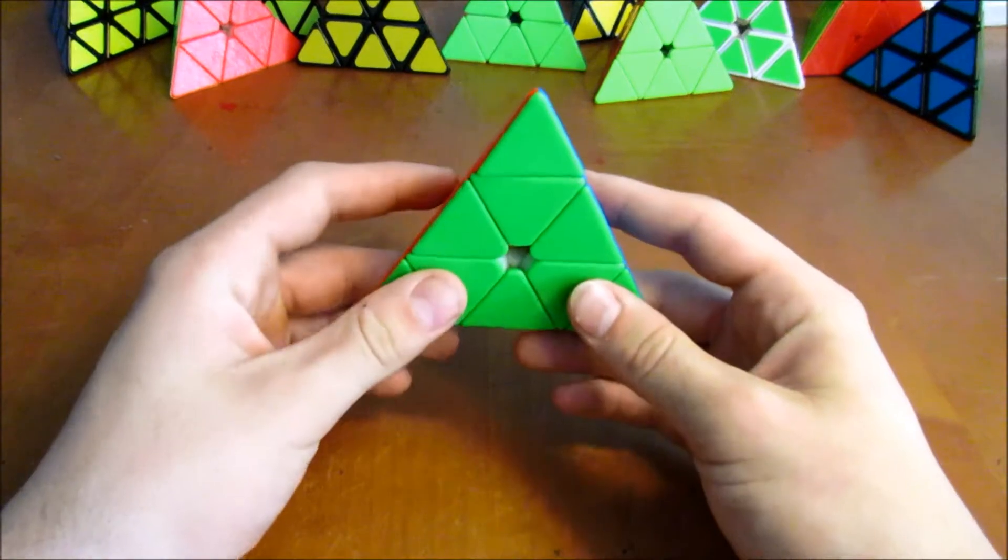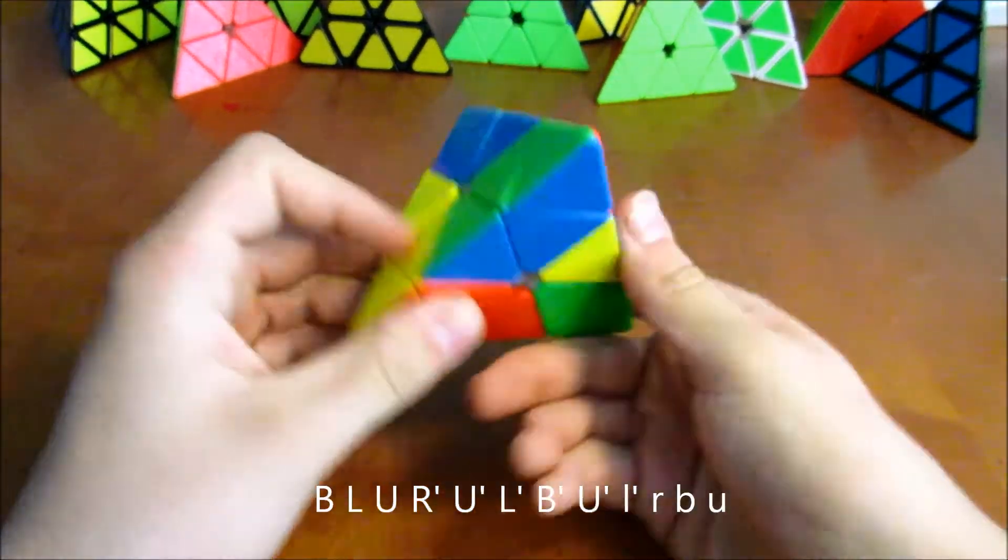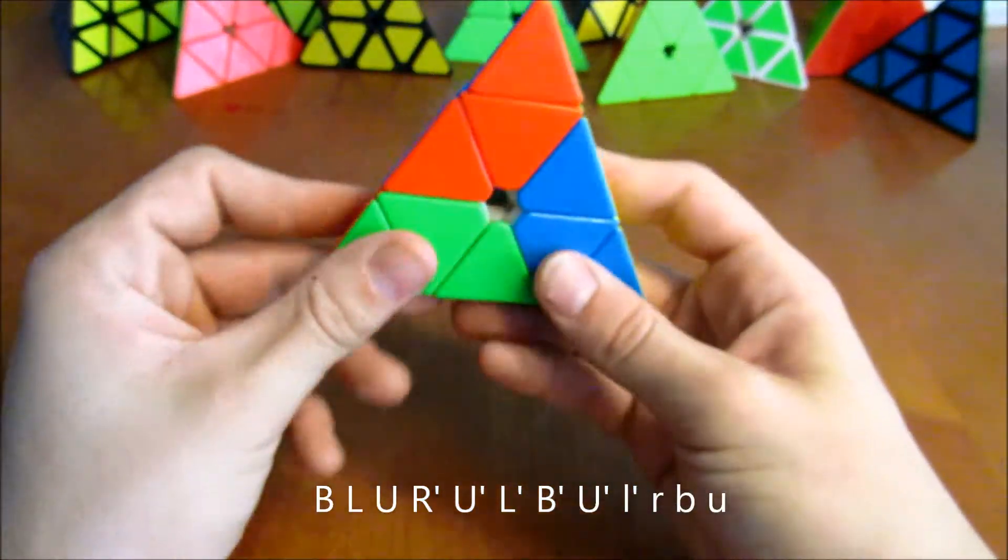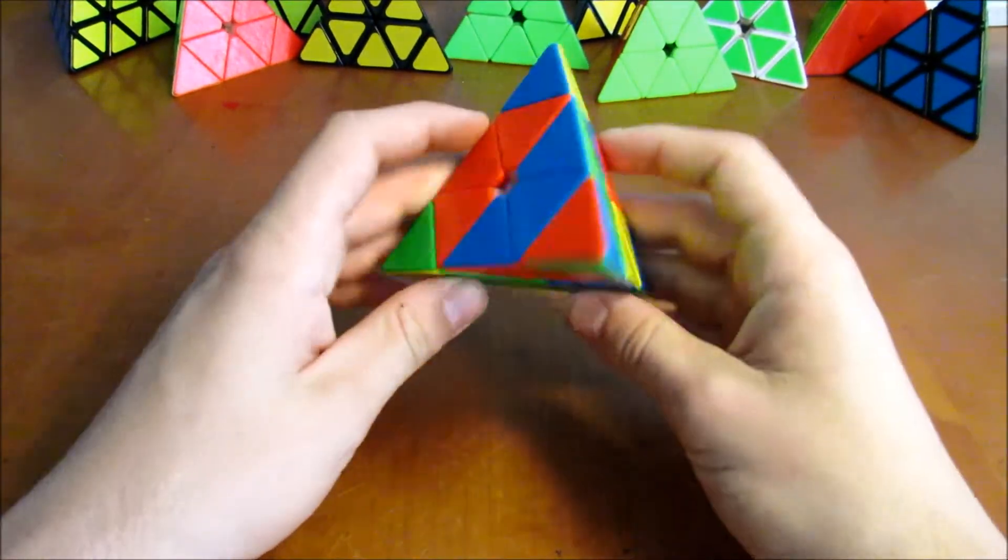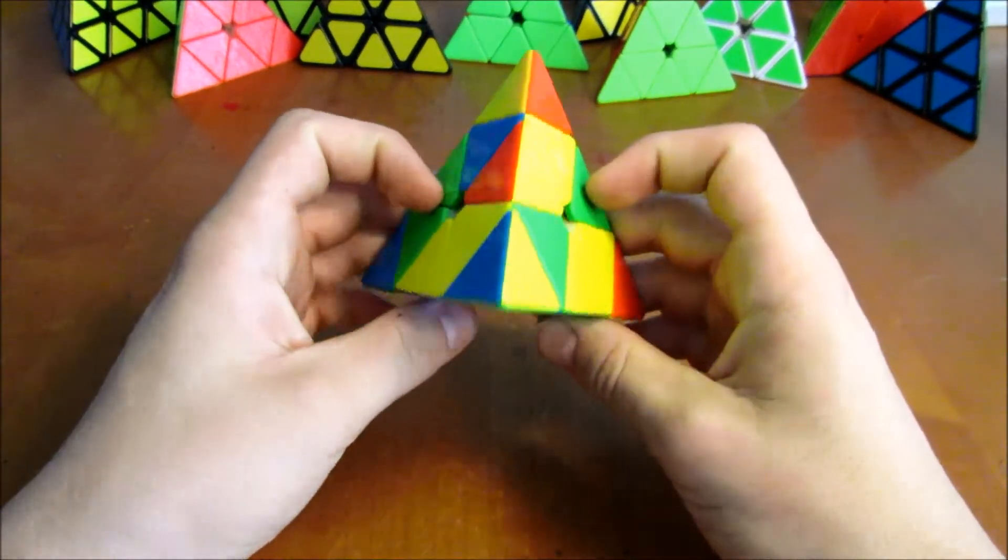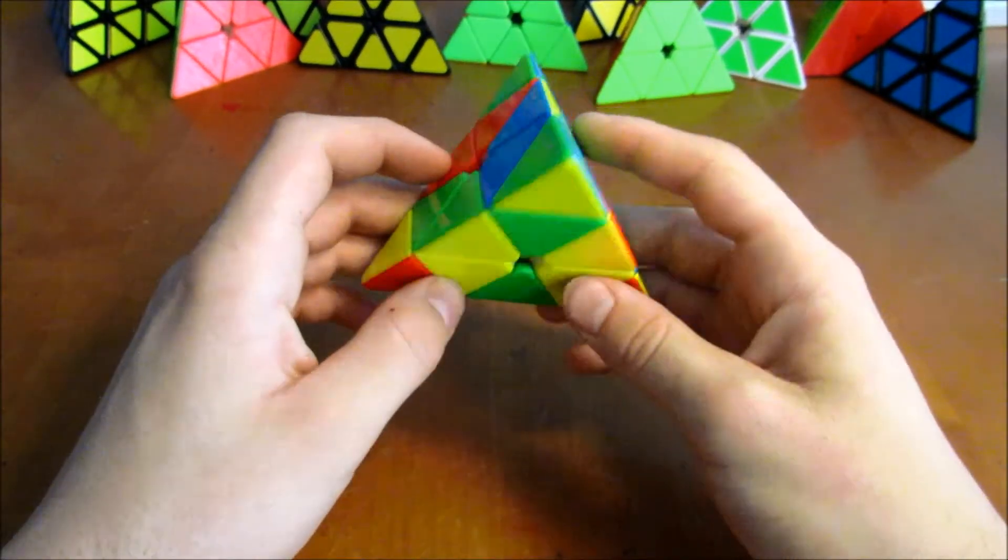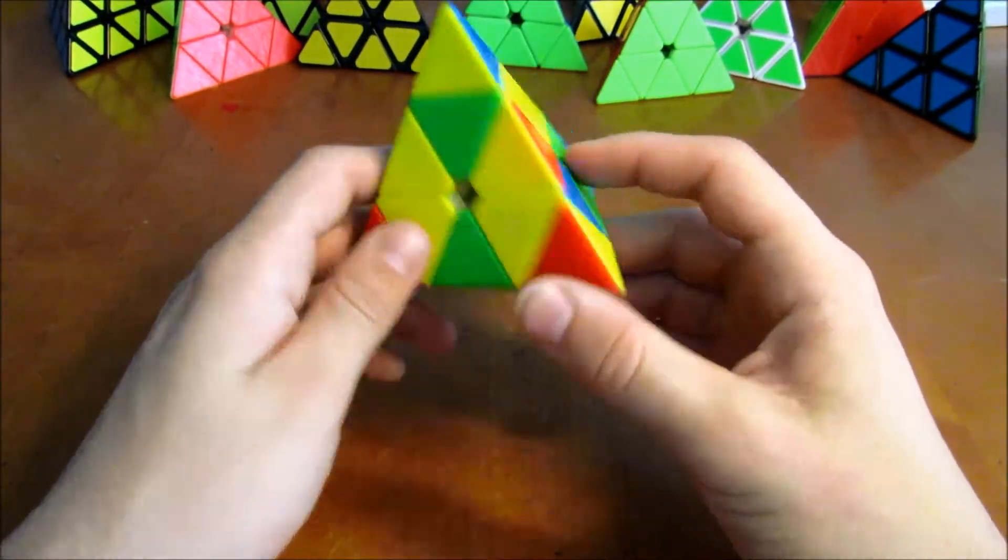On to the second scramble. So this one had all the tips, but it still had an incredible solution. Minus the tips it was only four moves with yellow.